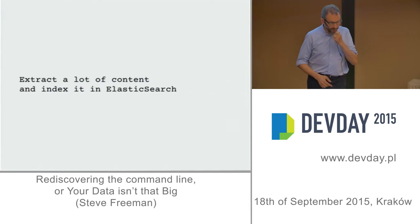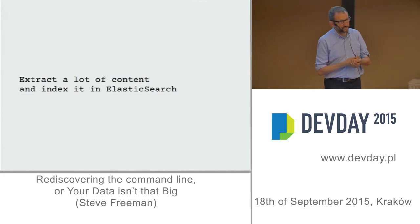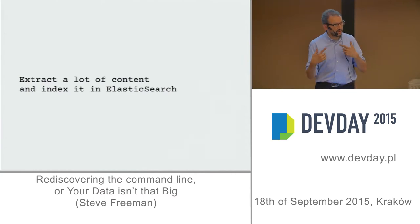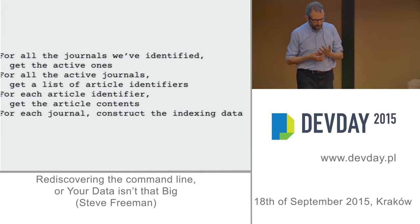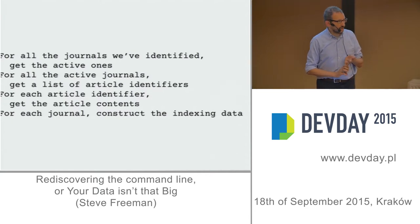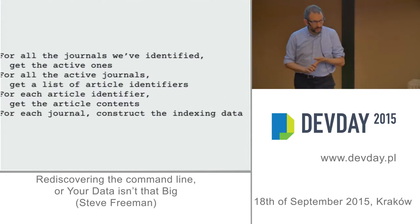We're working on a little project to do some text analysis. The basic algorithm is to extract a lot of content and stick it in Elasticsearch. In practice, this was slightly more complicated because of the API we had to the content source. We have journals, journals have articles, and we don't want all of them. So: get a list of all the journals, get the ones that are active, get a list of article IDs for all active journals, then get the contents of each article, construct an Elasticsearch index, and upload it.